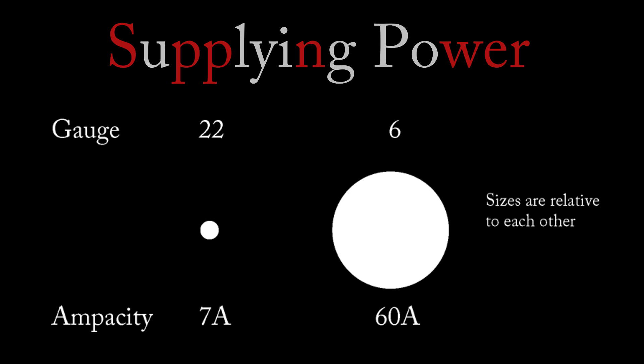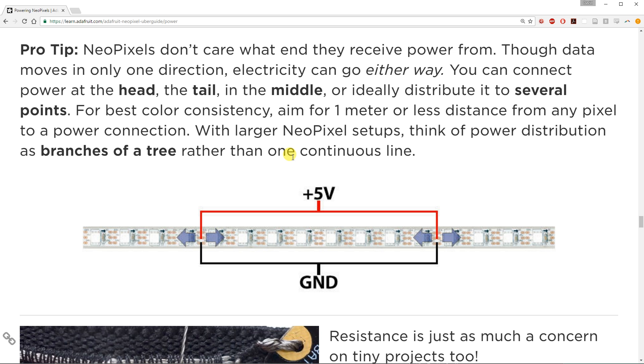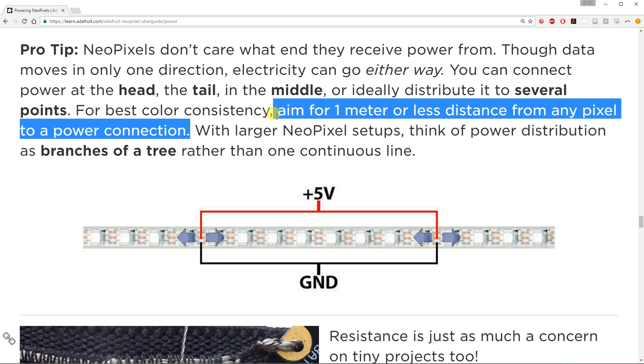So as you can see, the project becomes complicated with more LEDs. The first solution to this problem is to simply use less LEDs. This is the route taken in the Arduino build. So what is the maximum recommended distance from the power supply to any LED? The distributor for the LEDs recommends 1 meter or less distance from any pixel to power connection.